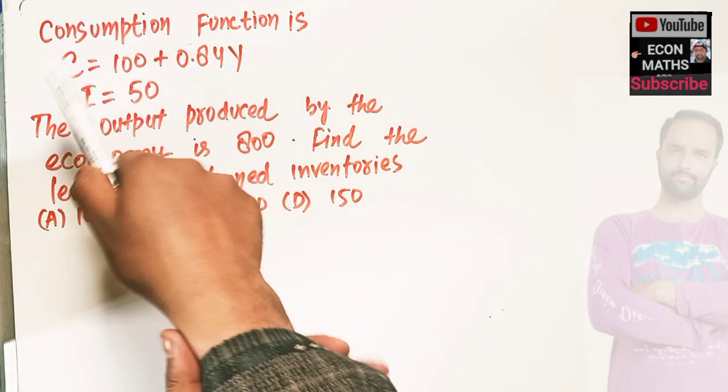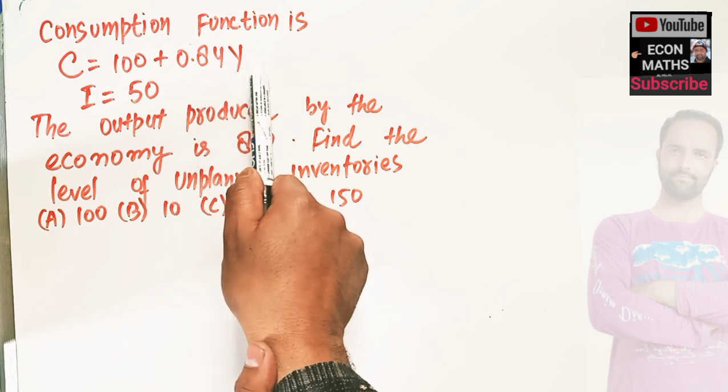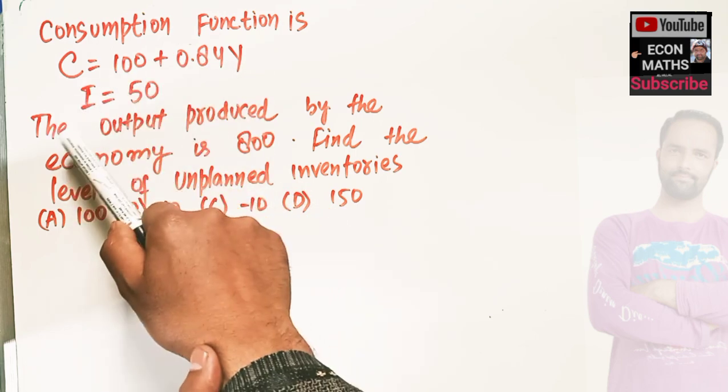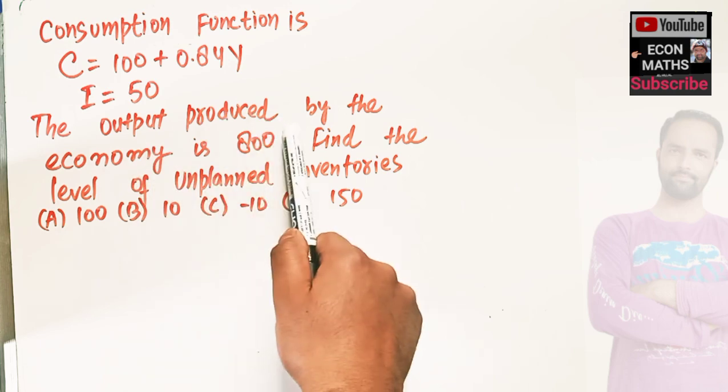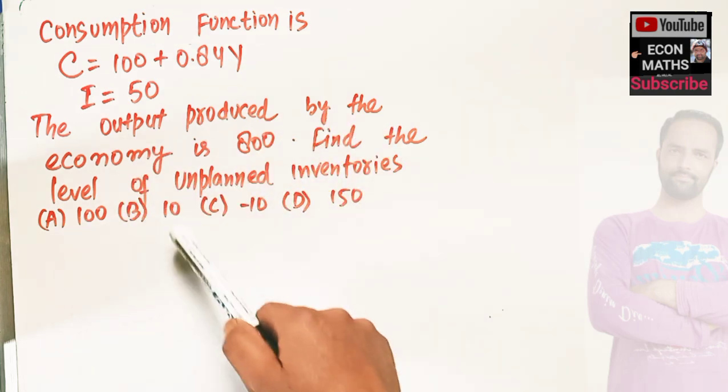The question is: consumption function is C = 100 + 0.84Y, where Y denotes the output, investment is 50. The output produced by the economy is 800. Find the level of unplanned inventories. The options are 100, negative 10, and 150.